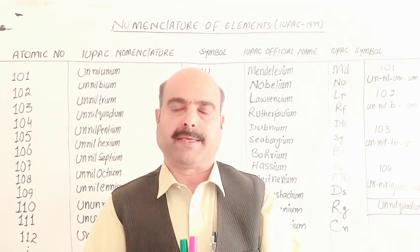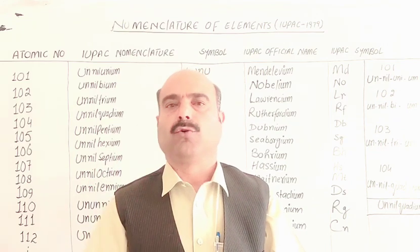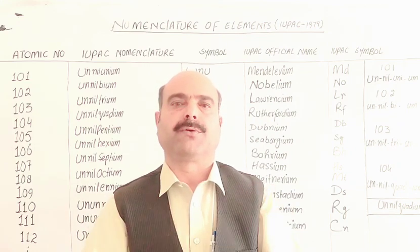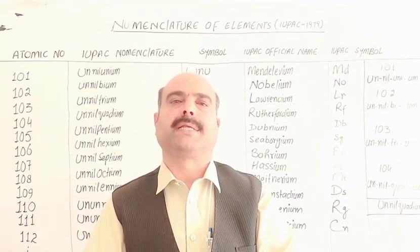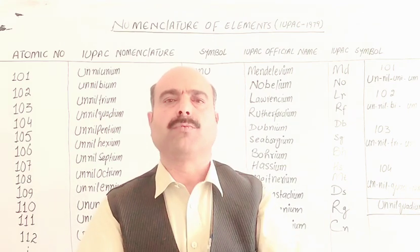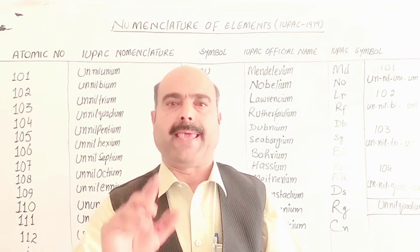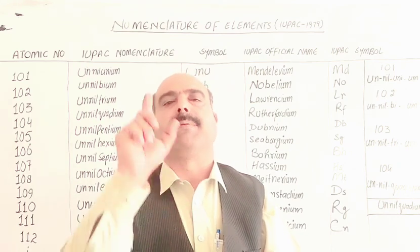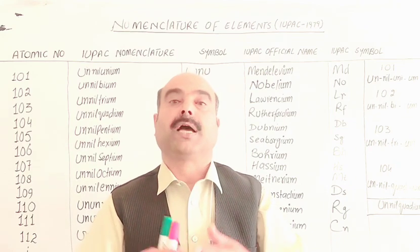In 1979, the International Union of Pure and Applied Chemistry rules were established. An agreement was made among scientists and chemists regarding the naming of elements — using the discoverer's name, the source's name, a special property, or historical context. According to these IUPAC rules, elements and compounds were named based on the number of elements in the periodic table.